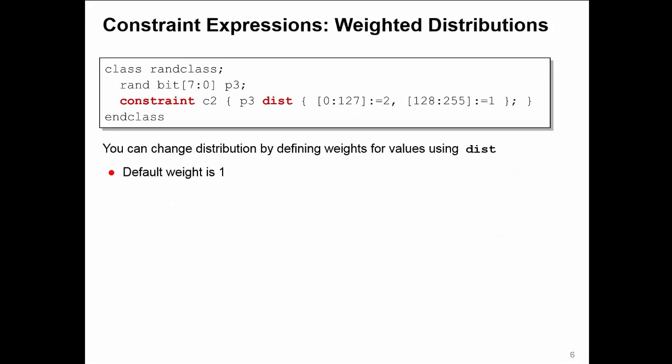You can change the distribution of values inside a list by using a variant on inside called dist. This allows you to define individual weights or probabilities for the values in the list. The default weight for any value is 1.